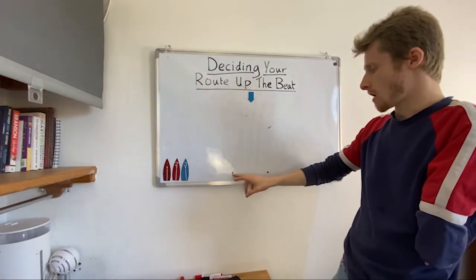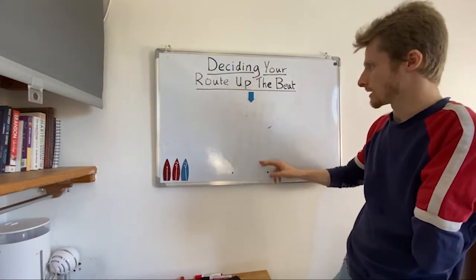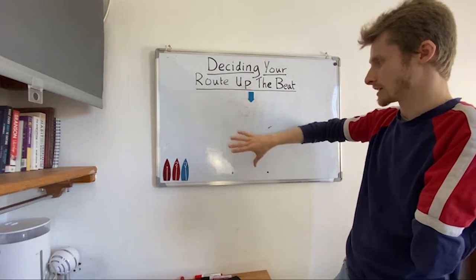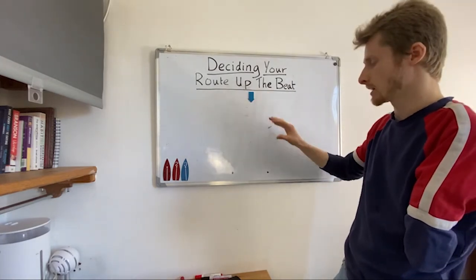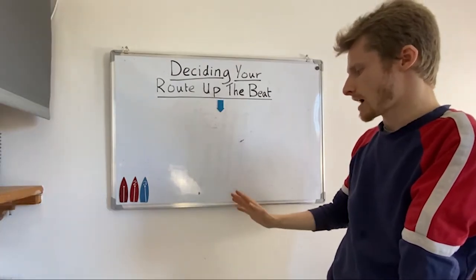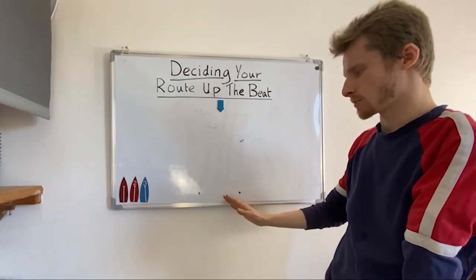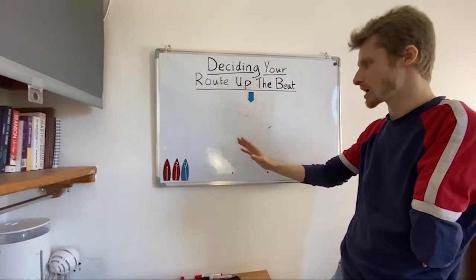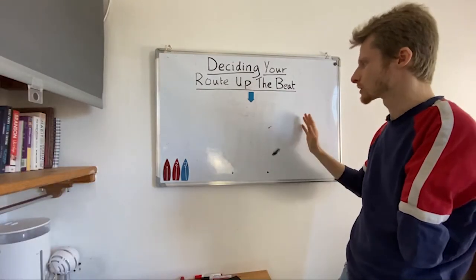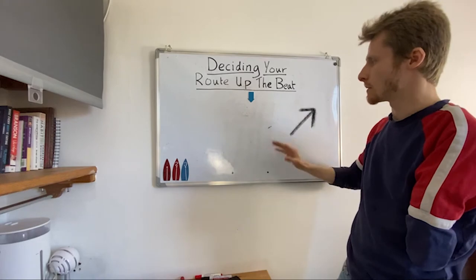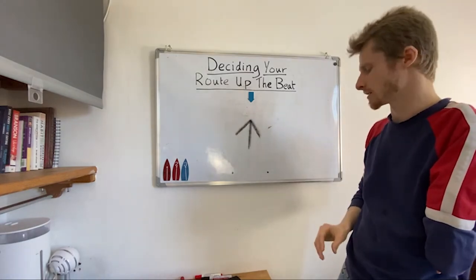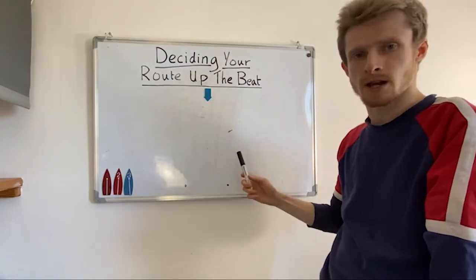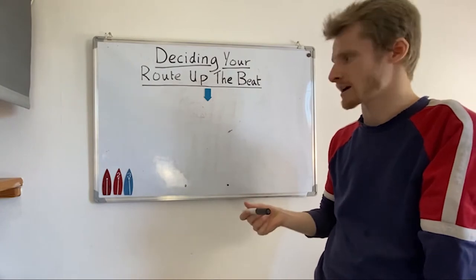Here we have our start line, wind direction, and first mark. This is our beat — our upwind leg — and we have a choice before we start of which side we go. We may want to go left, we may want to go right, or we may want to stick closer to the centre. Which way we go will be determined by several factors.